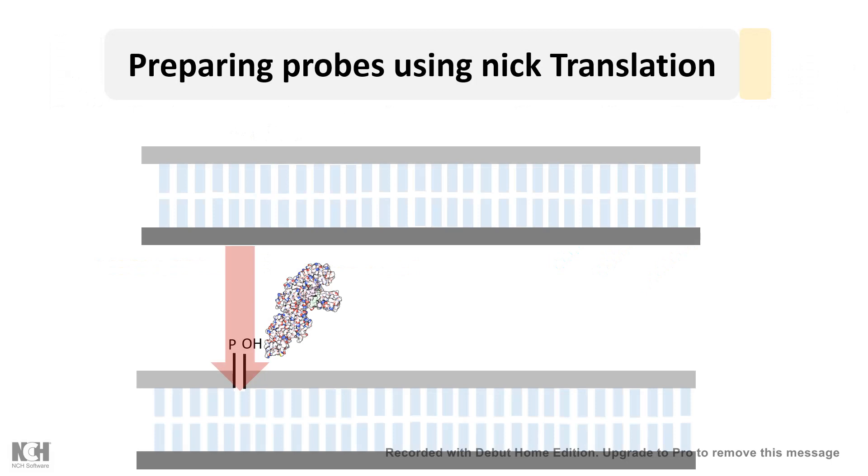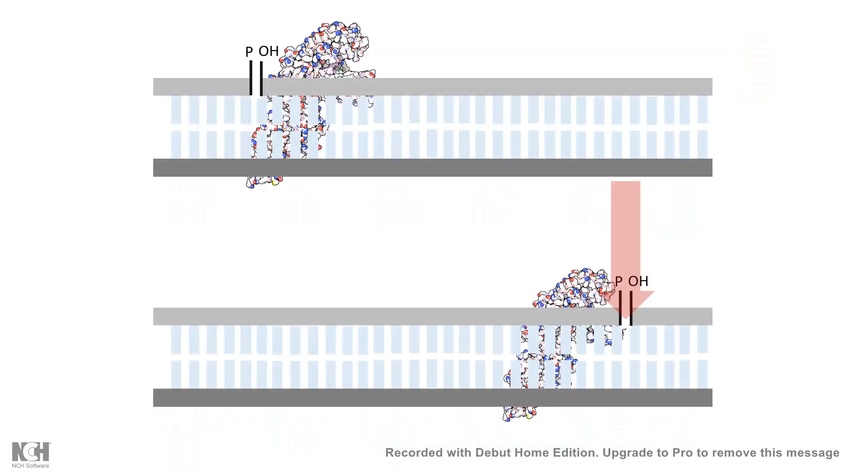The way nick translation works is you have a DNA of interest where you put DNA polymerase one, which creates a cut. Now DNA polymerase moves from a 5' to 3' direction.